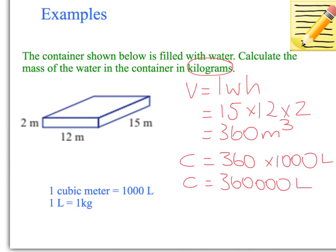Now we're still going. We have to work it out in kilograms. We know that 1 liter is 1 kilogram. So therefore, 360,000 liters is, so mass equals 360,000 kilograms. So the answer then is 360,000 kilograms, which is the mass of the container.